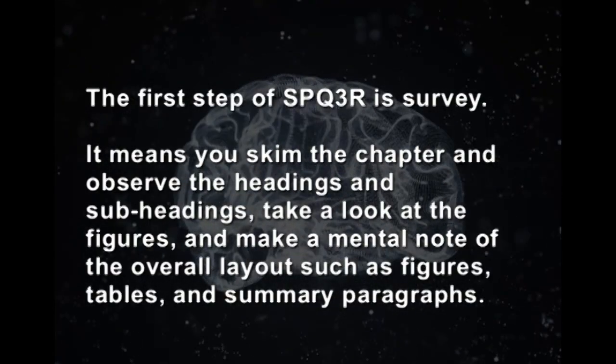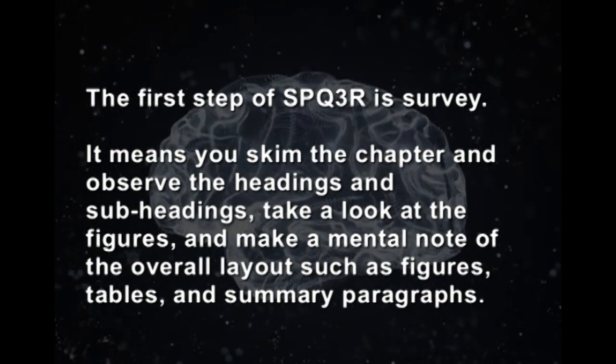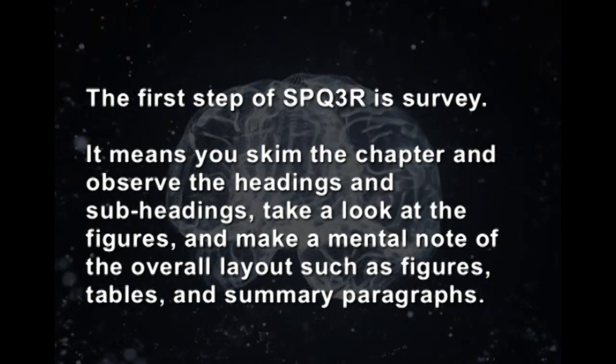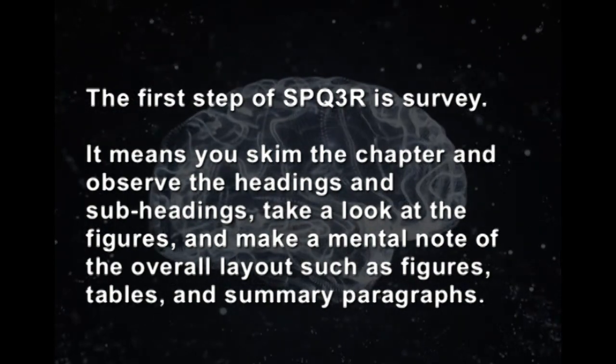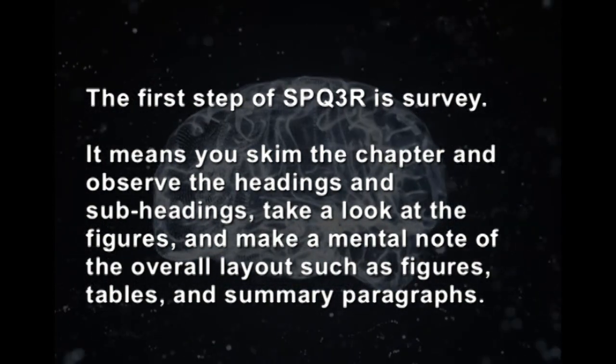Let us discuss in depth what this process is and how to go about it. The first step is S — Survey. It means you skim the chapter and observe the headings, subheadings, take a look at figures, and make a mental note of the overall layout such as figures, tables, and summary paragraphs. This survey takes around 3 to 5 minutes. Make a mental note of words in bold or italic.